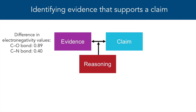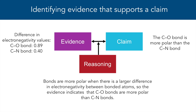If we compare the electronegativity values of these atoms, we can come up with our claim: the CO bond is more polar than the CN bond. Now let's talk about the reasoning part. Remember that the reasoning is what really connects our evidence to our claim, and we want our reasoning to be based on some sort of scientific definition, principle, or concept. Bonds are more polar when there is a larger difference in electronegativity between bonded atoms, so the evidence indicates that CO bonds are more polar than CN bonds. Without this final reasoning part, we're really just listing numbers and coming up with a claim. The reasoning allows us to articulate how we're connecting the difference in electronegativity values — the evidence — to the impact it has on the polarity of the bonds, our claim.